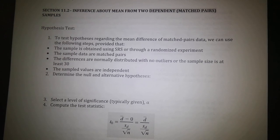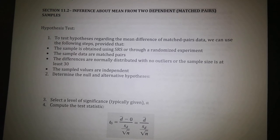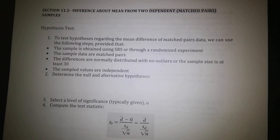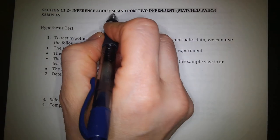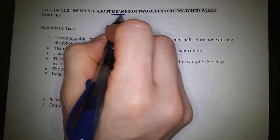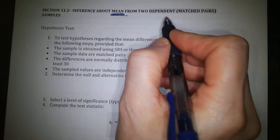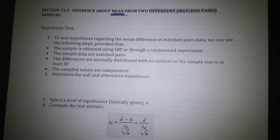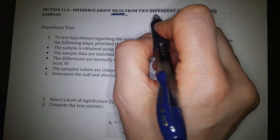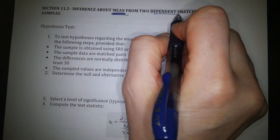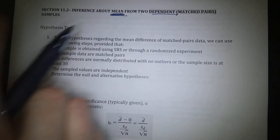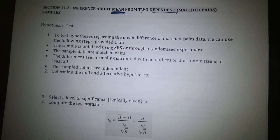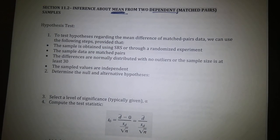In this Part 2 of Chapter 11 video, we're going to be discussing inference about a population mean from two different populations. First, we'll discuss dependent samples, and then we'll discuss independent samples.